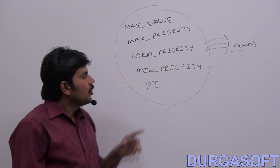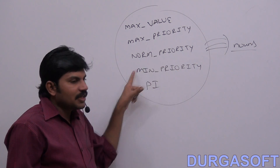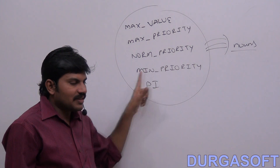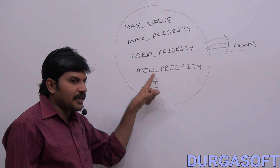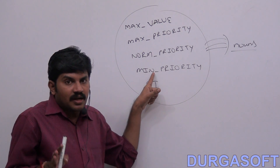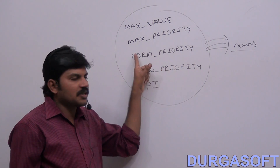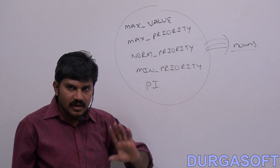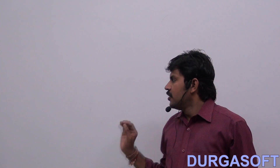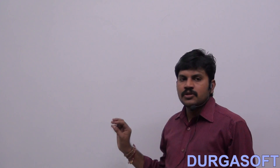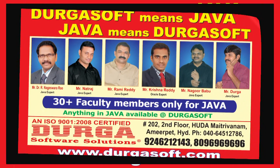If you observe the naming convention for constants — they should contain only uppercase characters. If a constant name contains multiple words, those words are separated with an underscore symbol. This is the coding standard for constants.